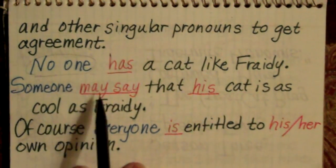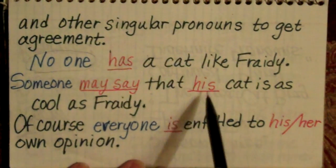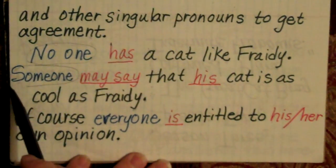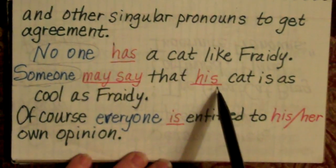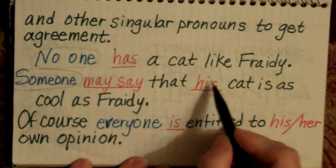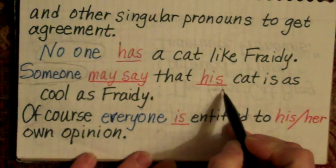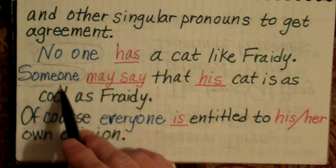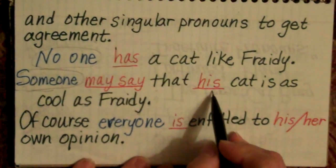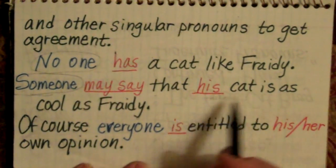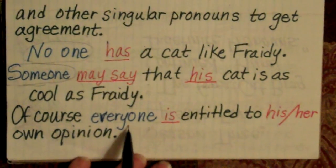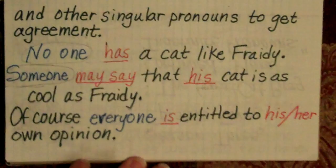Here's an example of a time when you use a singular verb and a singular pronoun. 'Someone' — this is an indefinite singular pronoun — 'may say that his cat is as cool as Frady.' I'm not going to put 'their' here as a plural, because 'someone' is singular in number, so I need a singular pronoun to refer back to it. Of course, everyone is entitled to his or her own opinion.